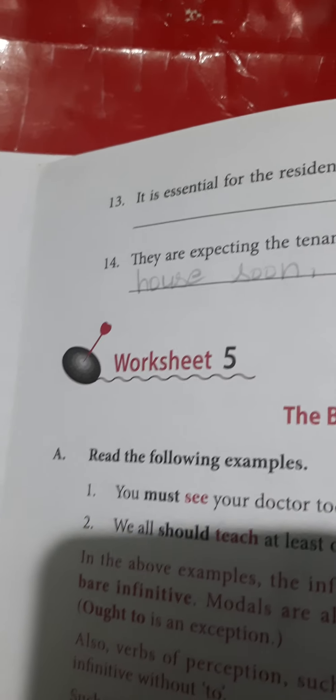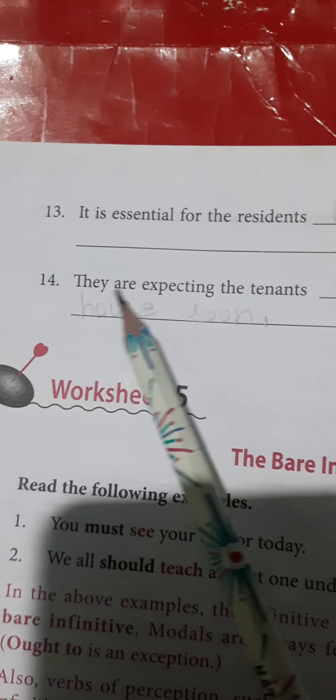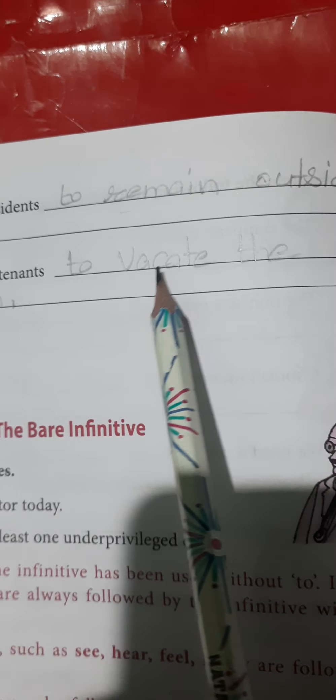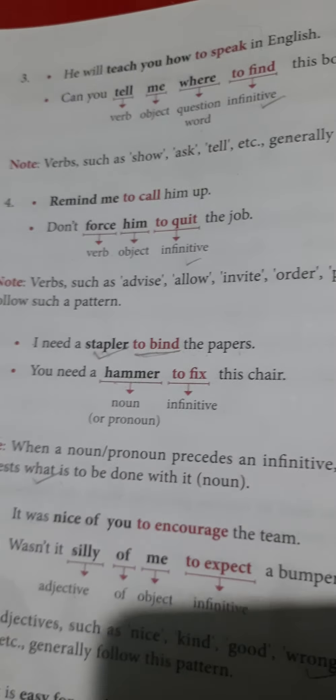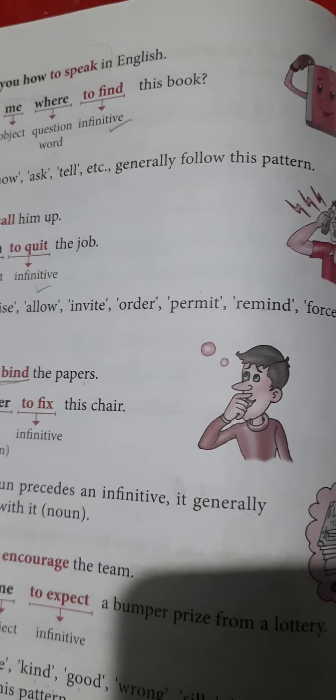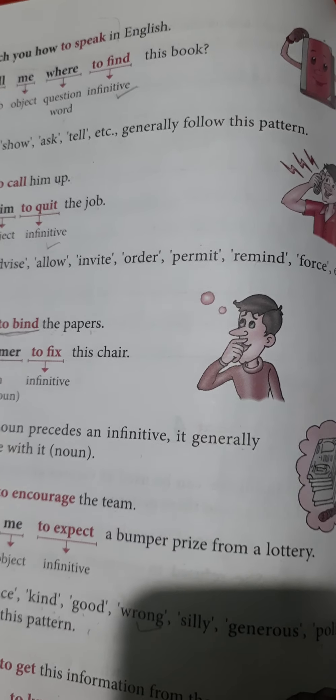'It is essential for the residents to remain outside.' 'They are expecting the tenants to vacate the house soon.' So this was your worksheet number 4. I hope it's quite clear to you now and you are able to frame sentences by following the structure pattern. Thanks for watching the video class.